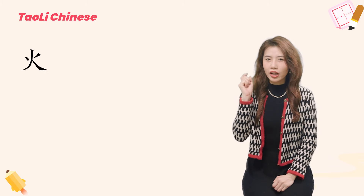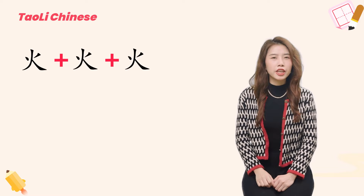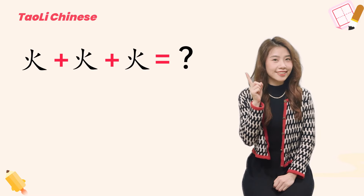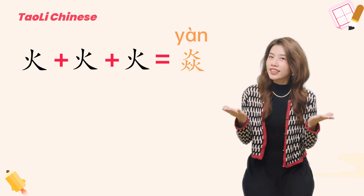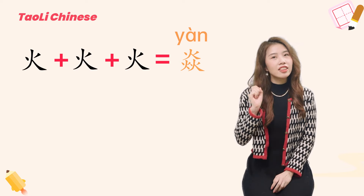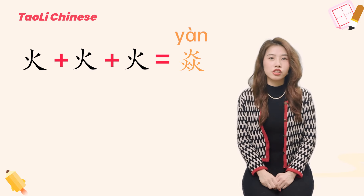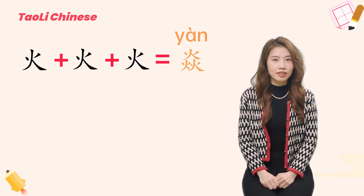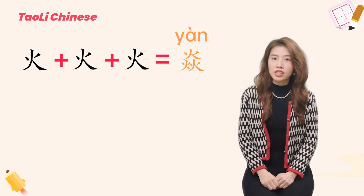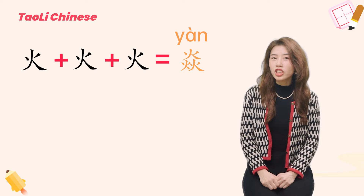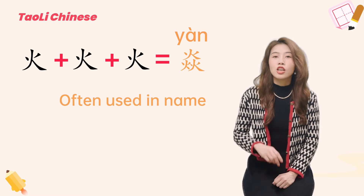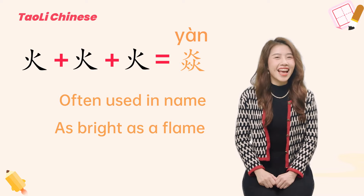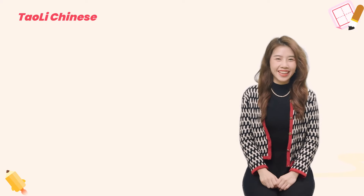Let's try one more time. What would the character be if there were three of them together? Bingo! It is 燚. 燚 literally means the fire is so strong that flames can be seen. But this word is not commonly used and is usually only used by very few people in their names to signify a future as bright as a flame. I'm sure you've learned more about the character 火.